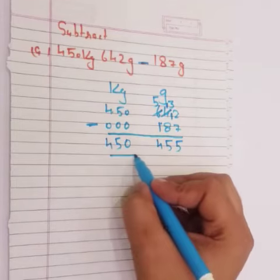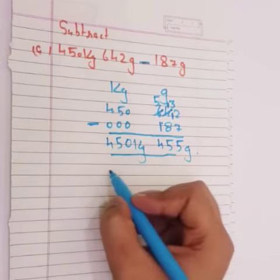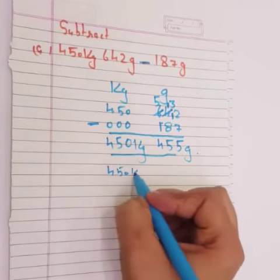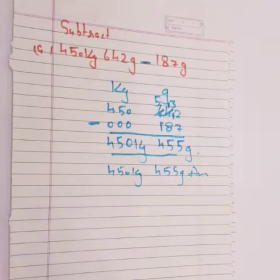Answer a gaya. 450 aapka kg mein a gaya. 455 aapka gram mein a gaya. Yarni gya 450 kg 455 gram answer. Clear? Thank you.